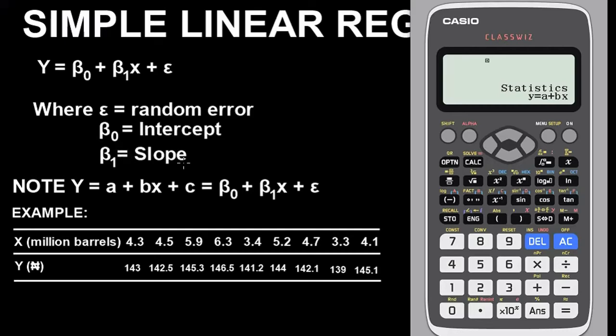Now to find the intercept, press Option, then press the down button to go to Regression. To find your a, remember our a is the same thing as β₀, which is our intercept. Press 1 then press equals. We have 134.520196. This is the value for a.